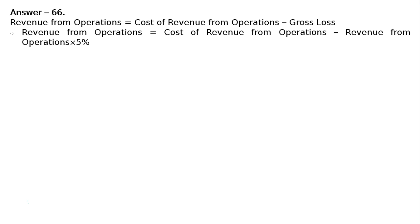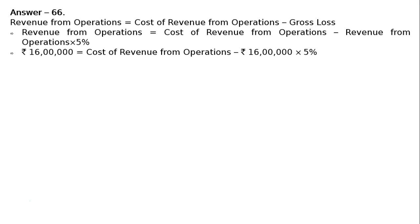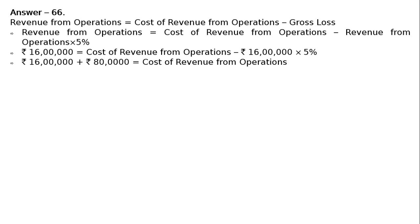Now we can substitute the values. Rs. 16 lakh equals cost of revenue from operations minus gross loss, which is 5% of sales. Then Rs. 16 lakh plus Rs. 80,000 equals cost of revenue from operations. So revenue from operations will be Rs. 16 lakh 80,000.